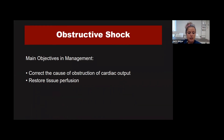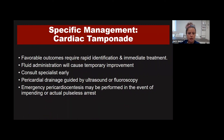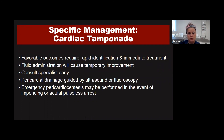The main objectives in managing obstructive shock are to correct the obstruction and restore tissue perfusion. For cardiac tamponade, rapid identification and immediate treatment are required for a good outcome. A fluid bolus gives temporary improvement, but reassessment is critical as things will revert. Consult specialists early. Pericardial drainage guided by ultrasound or fluoroscopy is the treatment, and emergency pericardiocentesis can be performed for impending or actual pulseless arrest. Recognize early and get a transport and specialty team on the way.